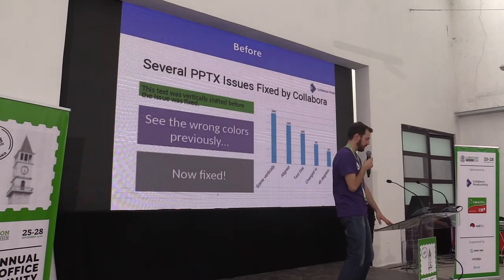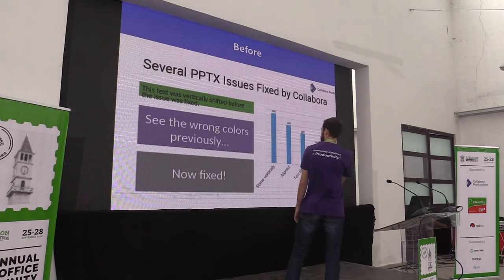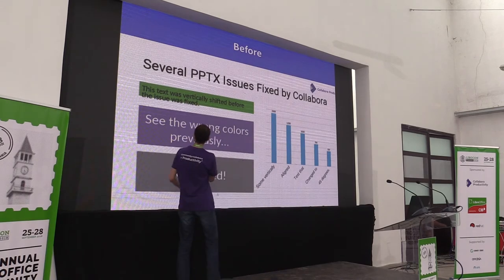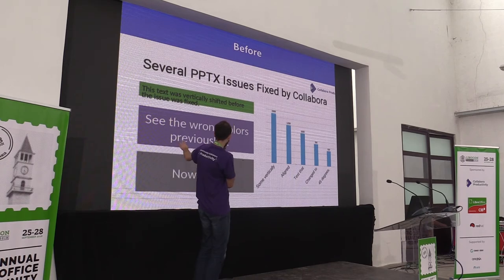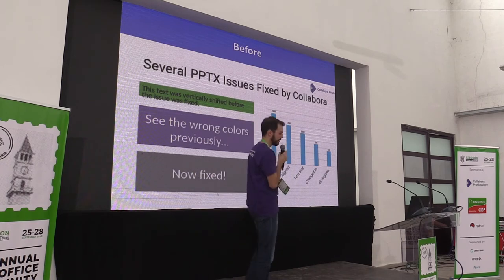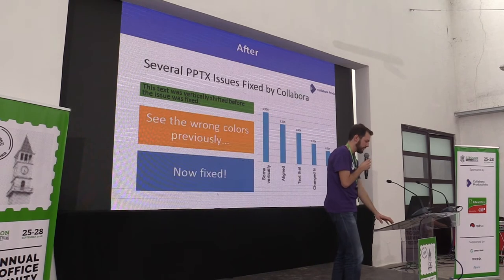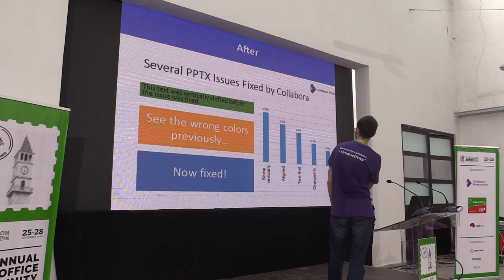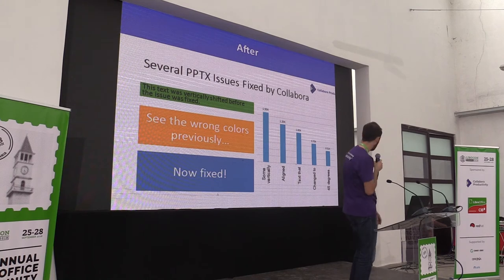You can see these two issues here. In the state before, you could see shifted text and incorrect colors. After my feature work, it now looks correct and you may notice how the chart colors have changed.